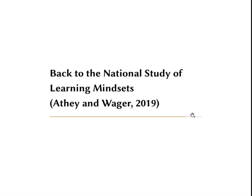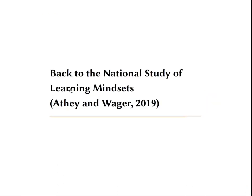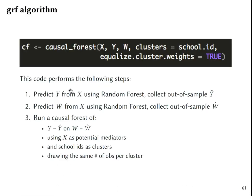Now if we return back to the National Study of Learning Mindsets, you can use the causal forest function from the GRF algorithm that is provided by Athey, Tibshirani and Wager. This code performs the following steps. Step number one, it predicts Y from X and it collects out of sample predictions of Y. Then it predicts W from X using random forest and it collects out of sample predictions for the treatment. So these two steps are similar to the first two steps of double machine learning with random forest.